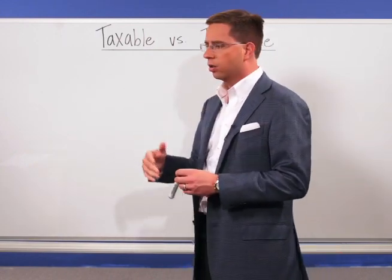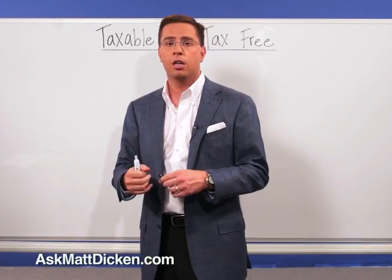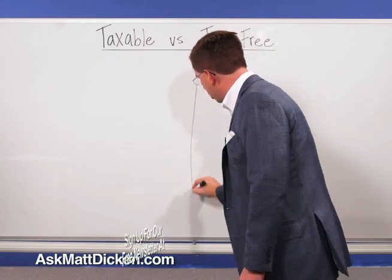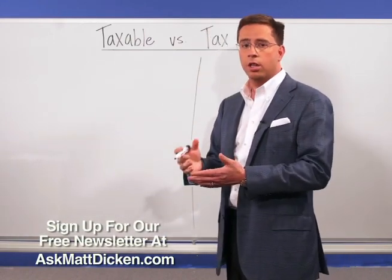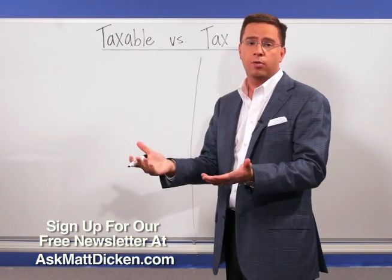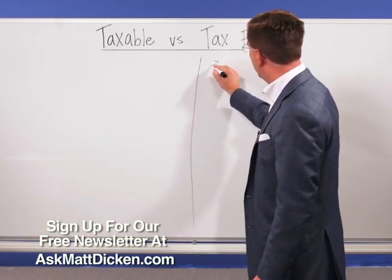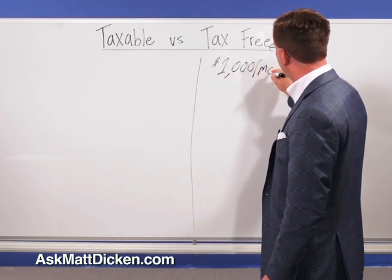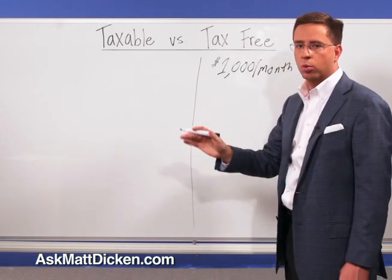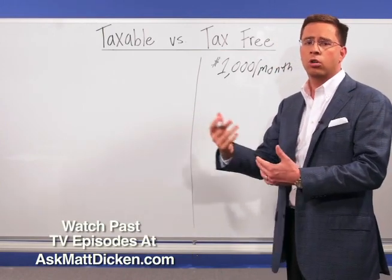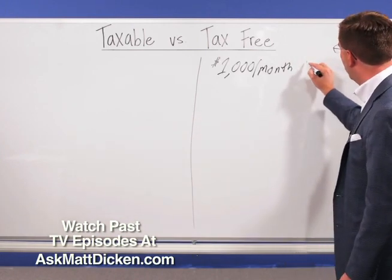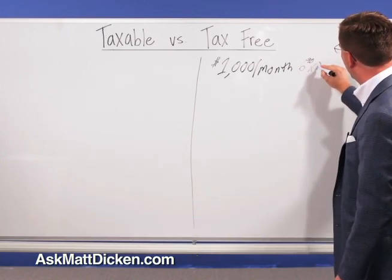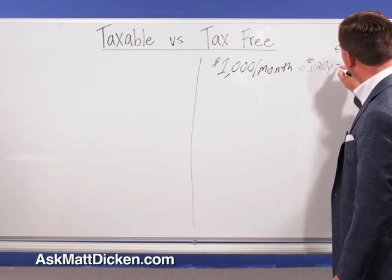First, we'll take a look at growing money in a tax-free environment — this might be a tax-free mutual fund or similar account. Let's say someone wants to invest additional dollars for their retirement and put their money into a tax-free environment. The example we're going to use: they invest $1,000 per month, every month going forward, and we'll assume they can earn 6% interest. We could use a higher or lower rate, but let's go with 6%, and they're going to do this over a 20-year period.